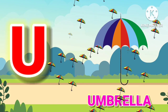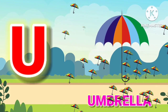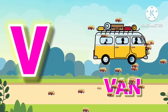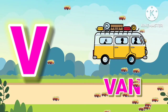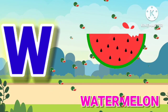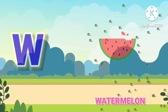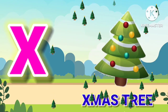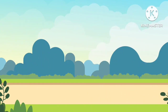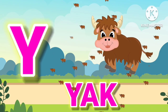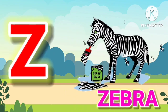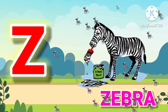U for umbrella, V for van, W for watermelon, X for x-ray, Y for yak, Z for zebra.